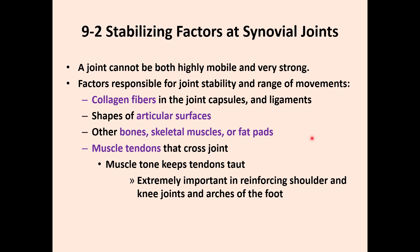The shoulder joint is the most mobile joint in the body, and the hip joint is the second most mobile. Both are stabilized by surrounding muscles and their tendons. Without those tendons, these joints would be very unstable. Ligaments and tendons also wrap around the knee and foot joints, which bear significant weight, to make them more stable.